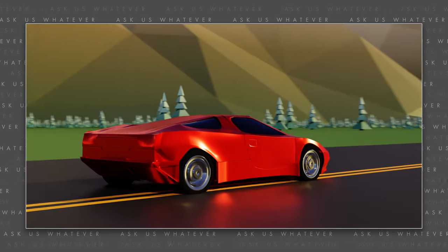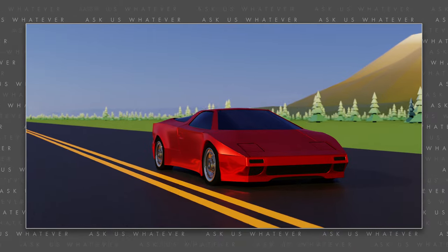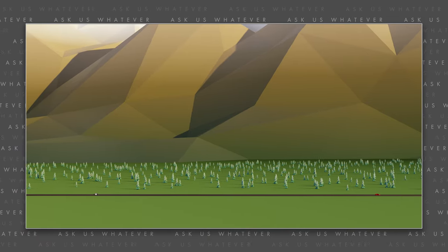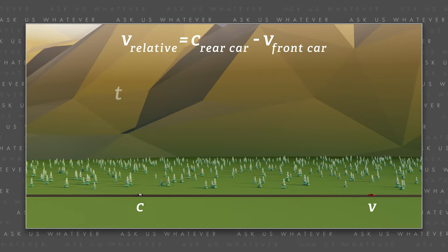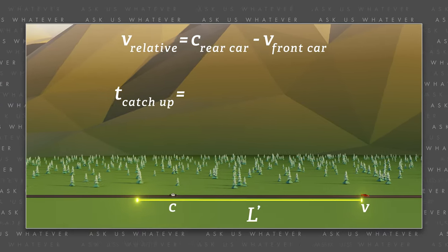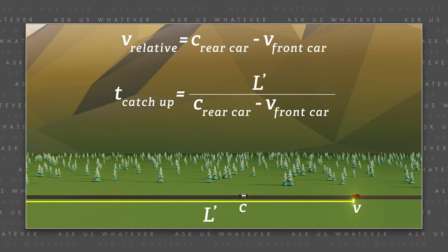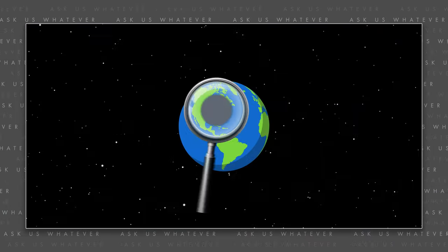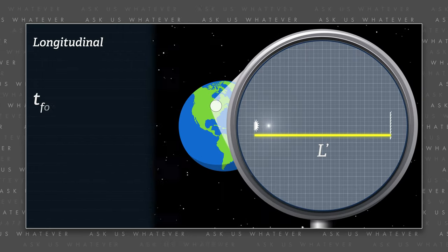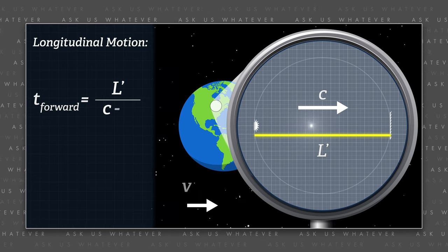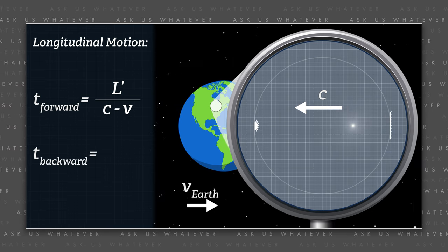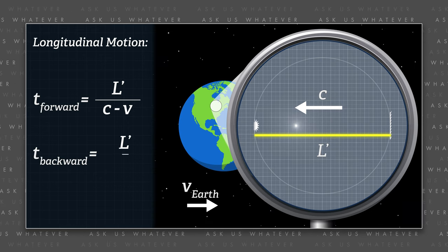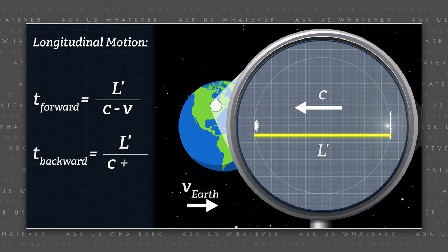As we discussed in episode two, it's like a car chase. The front car is trying to escape, but the trailing car is moving faster. The trailing car closes the gap between them at a rate equal to their relative speed, which is the speed of the faster trailing car minus the speed of the slower front car. The time required for the trailing car to catch the front car is the distance between them, l', divided by the relative speed at which the trailing car closes the gap. Michelson and Morley reasoned that the time required for light to travel in the direction of Earth's motion would be l' divided by the speed of light minus the speed of the Earth moving through the ether. And similarly, they reasoned that once the light bounced back from the downstream mirror, it would return in less time, equal to l' divided by light speed plus the speed of the Earth through the ether.